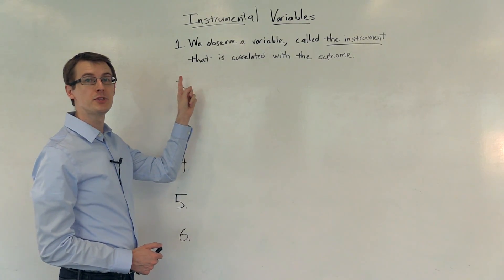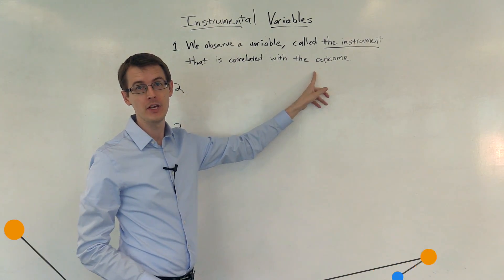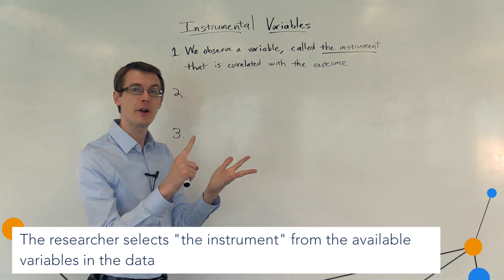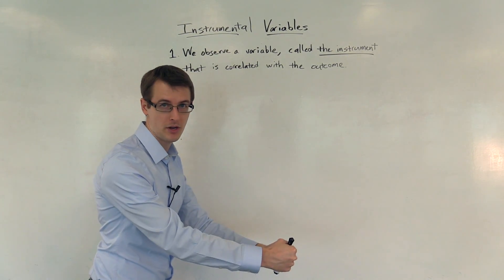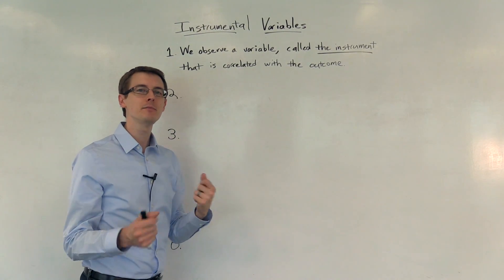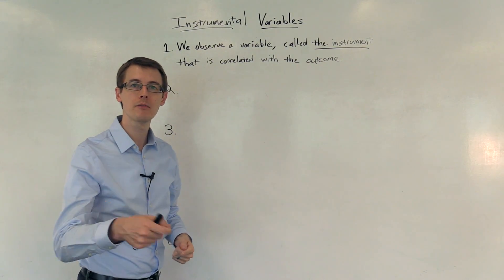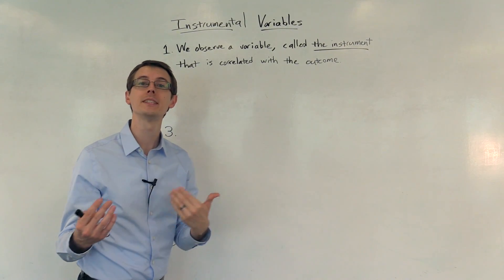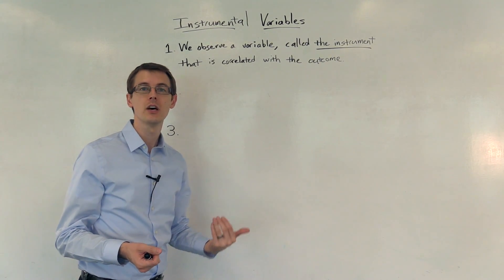Step 1: We observe a variable called the instrument that is correlated with the outcome variable. We've got our outcome variable — the variable we're trying to affect — and our treatment variable, the variable whose effect on the outcome we want to learn. Now we have a third variable called the instrument. When we look at our data, it seems that the instrument is correlated with the outcome. Units with higher levels of the outcome variable tend to have higher levels of the instrument, or maybe it's negatively correlated.